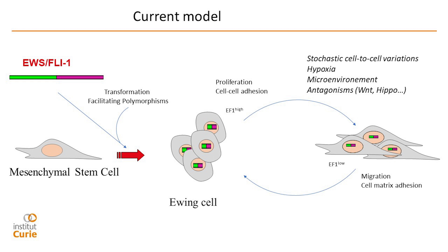This is the model we are working to refine: what are the reasons for this plasticity between EWS-FLI1-high and EWS-FLI1-low? Is it stochastic? We know that hypoxia can be very important: acute hypoxia leads to an increase of EWS-FLI1, while chronic hypoxia leads to a strong decrease. So hypoxic areas in the tumor may be very important in decreasing EWS-FLI1 activity — potentially leading to metastasis. There are also some antagonistic pathways like Wnt or Hippo that may be very important for EWS-FLI1 activity.